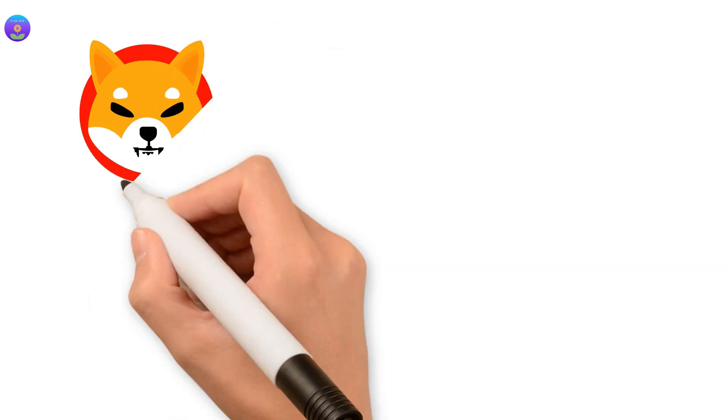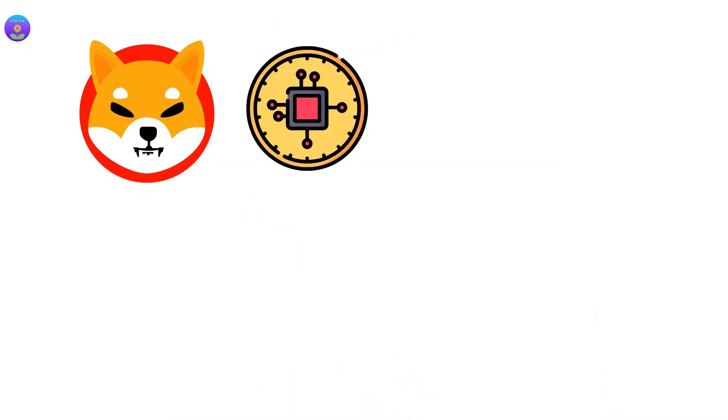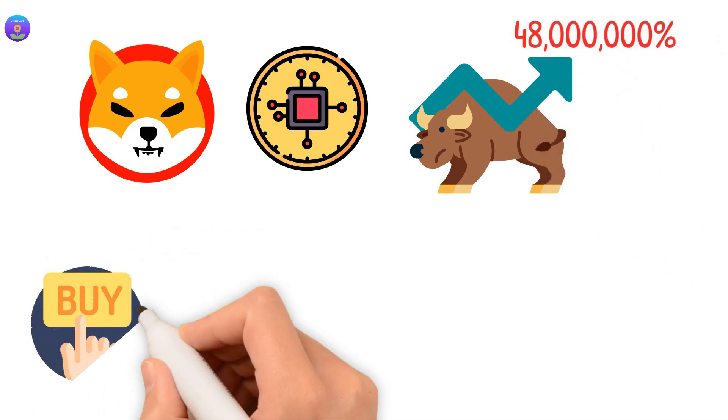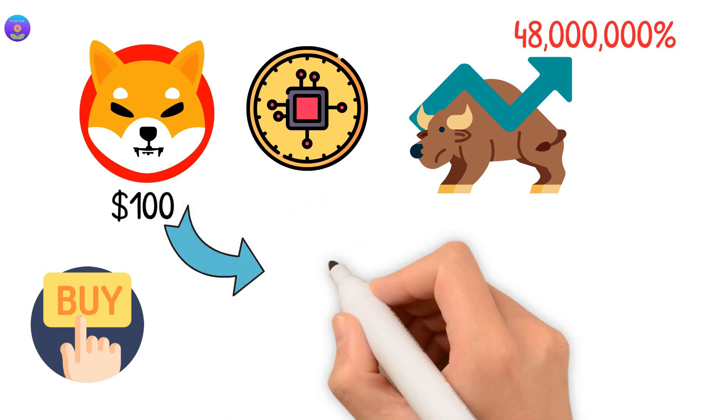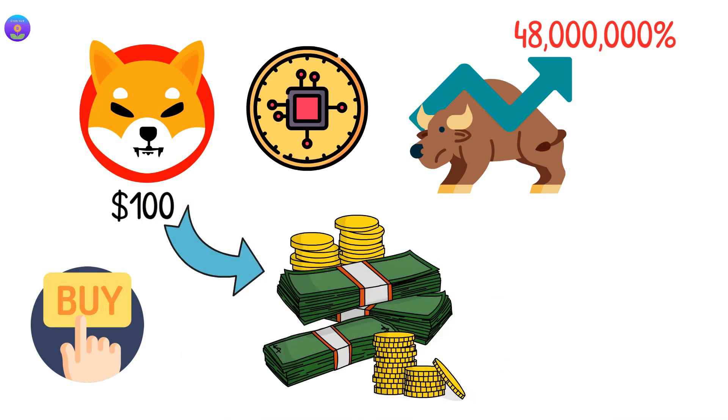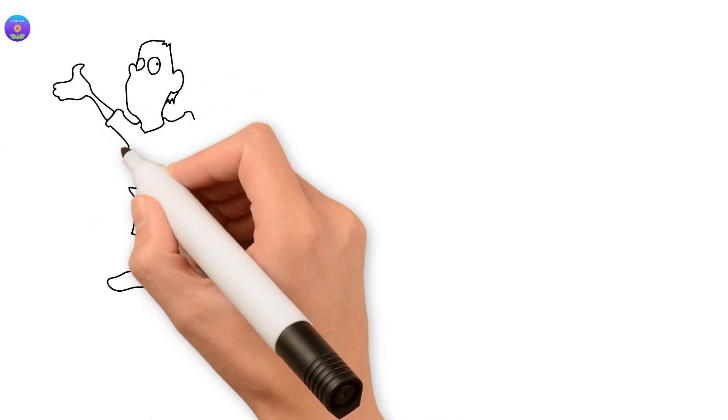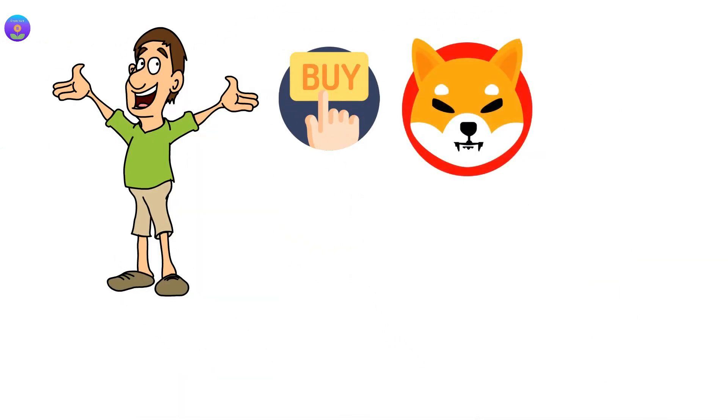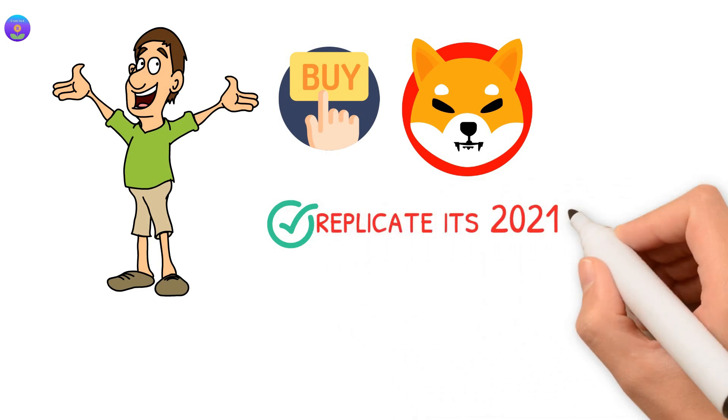Shiba Inu was one of the best cryptocurrency performers in the last bull cycle. It rallied by over 48 million percent, meaning that anyone who bought just $100 worth of SHIB a year ago is now a multi-millionaire. Such crazy rates of return have mesmerized a lot of investors, and many are still buying SHIB in hopes that it could replicate its 2021 returns.